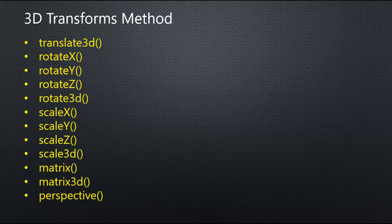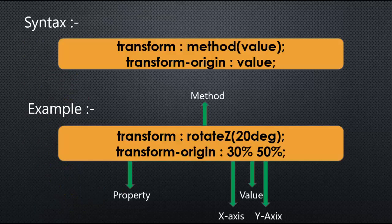These are some important 3D transform methods. For the syntax, transform is the property; we pass the method like translate, scale, or rotate, and we pass the value for that method. Transform-origin is a property where we pass the value as a length. For example, rotate Z is a method and 20 degrees is a value. If using transform-origin, we need to pass the X-axis and Y-axis values.